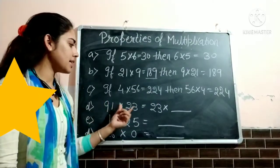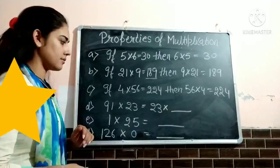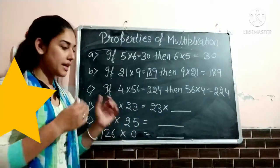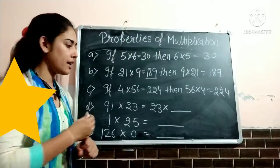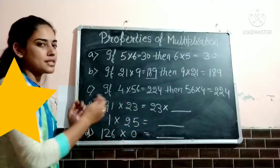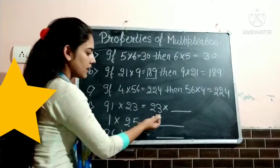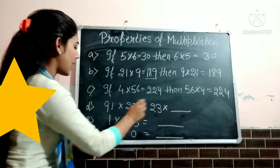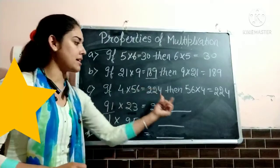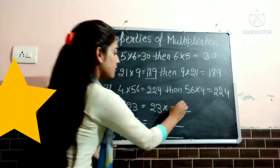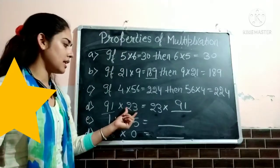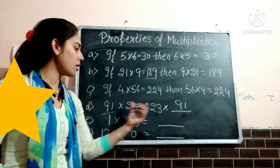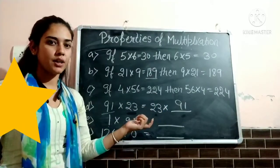Next is: 91 multiply 23 is equal to 23 multiply dash. In this question we will compare both sides. In the right hand side we have 23, and in the left hand side 23 also. But in the right hand side there is a blank, and in the left hand side there is 91. So we will write here 91, because 91 multiply 23 and 23 multiply 91 — only the order changed, the product remains same.